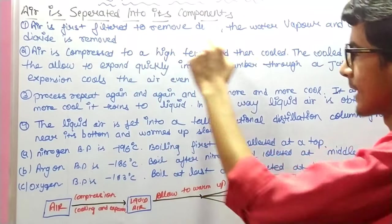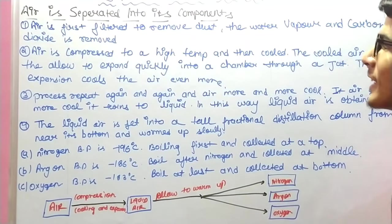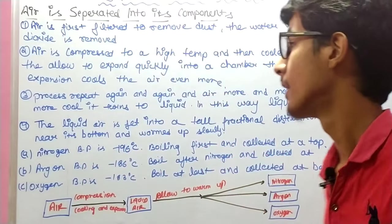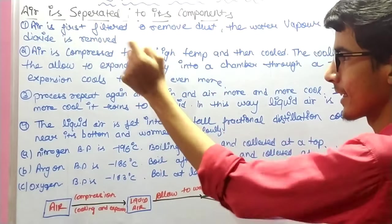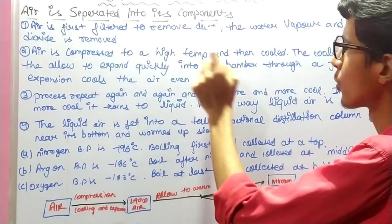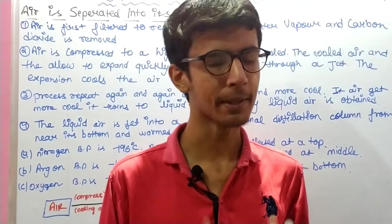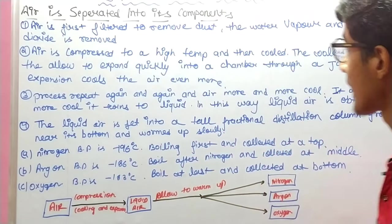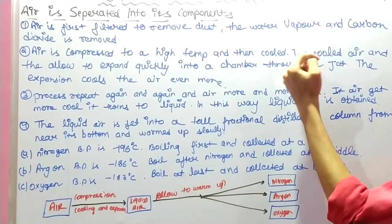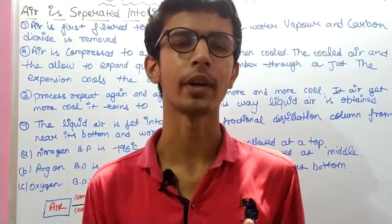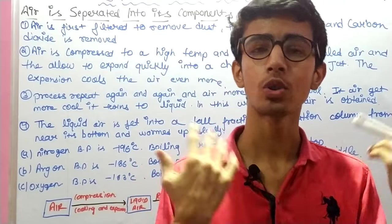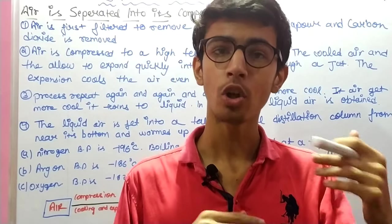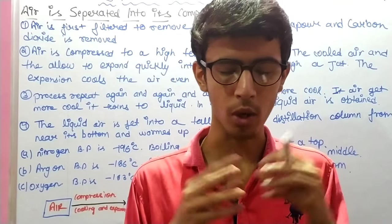Air can be separated into its components. First, air is filtered to remove dust, water vapor, and carbon dioxide. We remove these because when we cool the air, they would become solid.